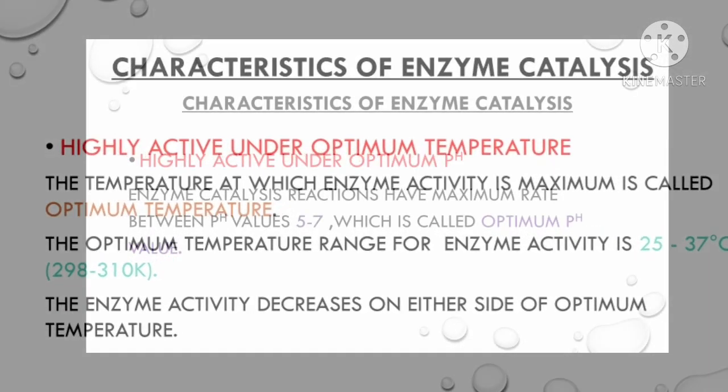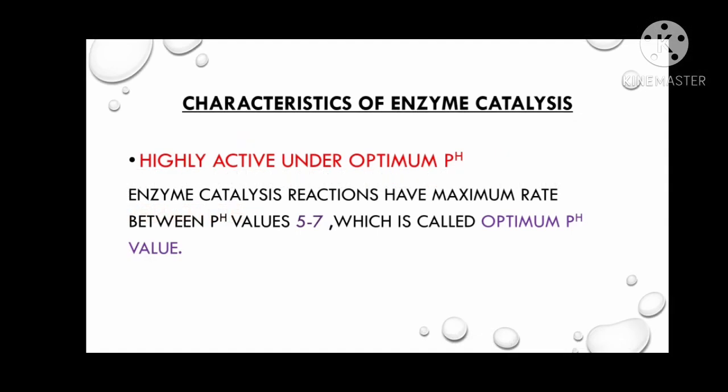In the next characteristic feature, enzyme catalysis is highly active under optimum pH. There is a particular pH range. The optimum pH range is between 5 and 7. The enzyme catalysis reactions have maximum rate between pH values 5 to 7, which is called the optimum pH value.